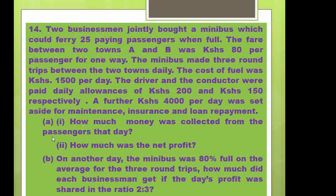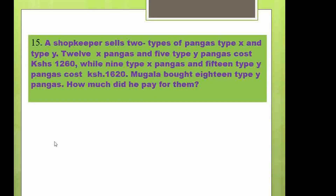Question number fifteen: a shopkeeper sells two types of pangas, type X and type Y. Twelve type X pangas and five type Y pangas cost 1,260 shillings, while nine type X pangas and fifteen type Y pangas cost 1,620 shillings. Find the cost of 18 type Y pangas. You can copy that down and work it out.